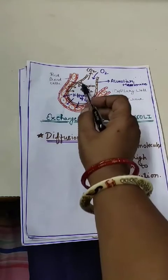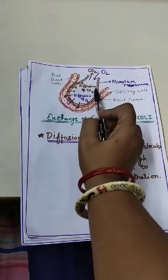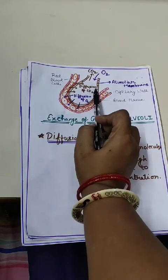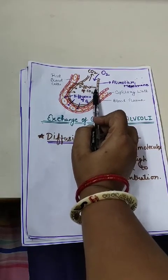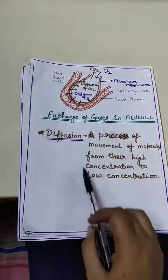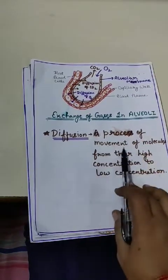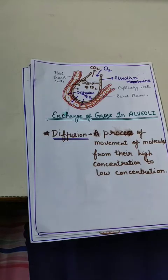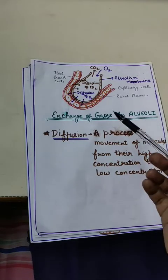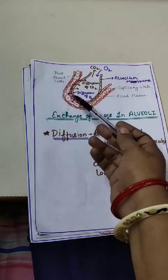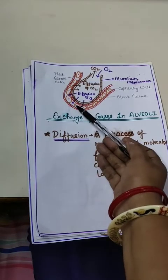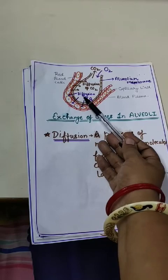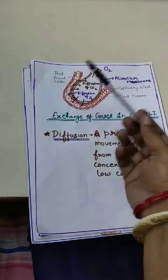Diffusion is a process of movement of molecules from their higher concentration towards their lower concentration. Here, oxygen is moving out from the alveoli and getting into the blood, while carbon dioxide is moving from the blood into the alveoli.